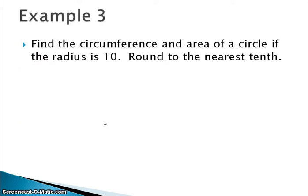So here we see you find the circumference and the area of a circle if the radius is 10. First thing I'm going to do is just rewrite my formulas. So C equals pi times diameter or 2 pi r. Area is pi r squared. Round to the nearest tenth.